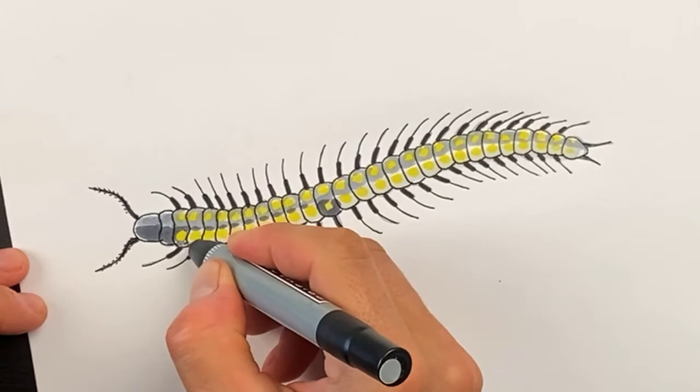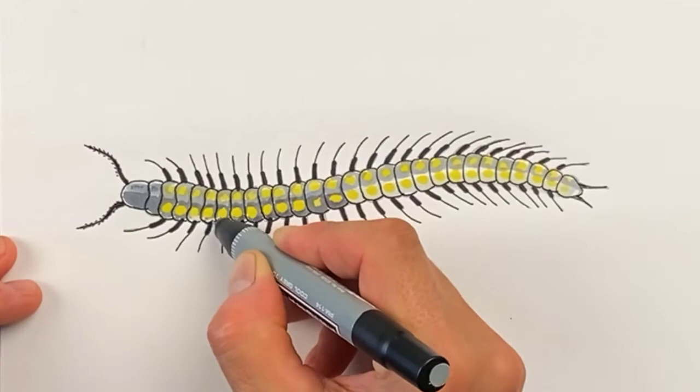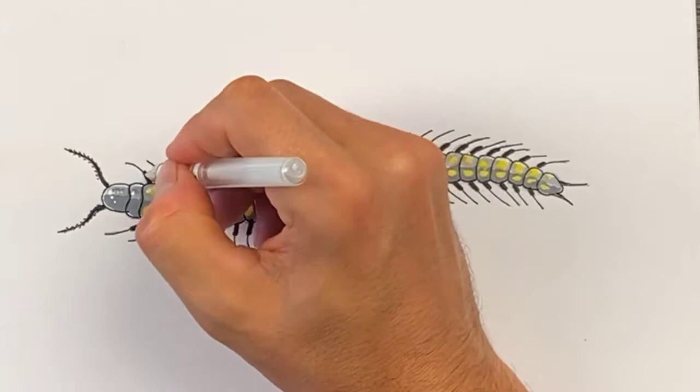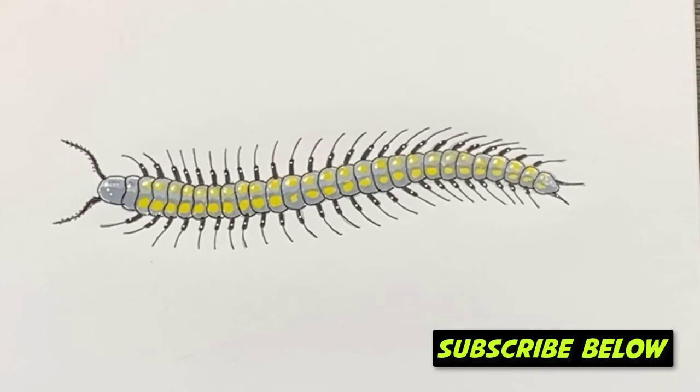All right, we did it. We finished our centipede. We made a gray centipede with some yellow kind of evil dots on there, and then we added some highlights using a white ink pen. So I think if yours looks close to this, I think you did a great job. So don't forget, if you want to check out some more of our tutorials that come up, subscribe to our channel and you'll be one of the first to see them. So hopefully you guys had fun and we will see you guys next time. Bye bye.